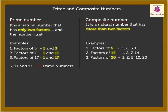Here, all the above numbers have more than two factors. These numbers are called Composite Numbers.